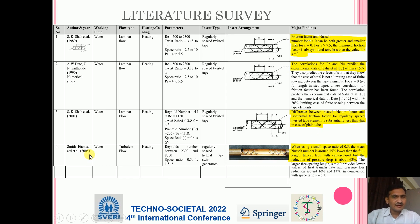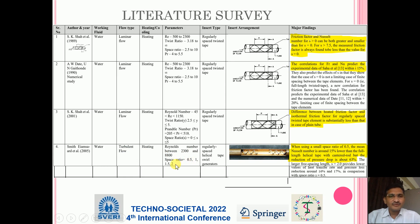Another work done by Smith Imshad in 2005. The working fluid used is water. It is worked in turbulent flow, used for heating application. The Reynolds number range is 2300 to 8800, whereas the space ratio is 1.5 and 2. Regularly spaced helical tape swirl generators are used. The major finding is that when using a small space ratio of 0.5, the mean Nusselt number is around 15 percent lower than the full length helical tape with a centered rod, but the reduction in pressure drop is about 63 percent.